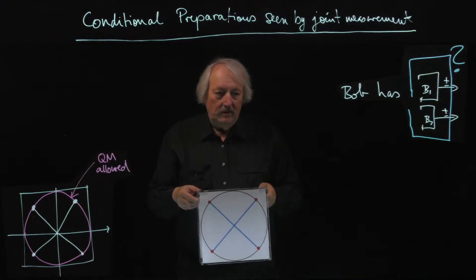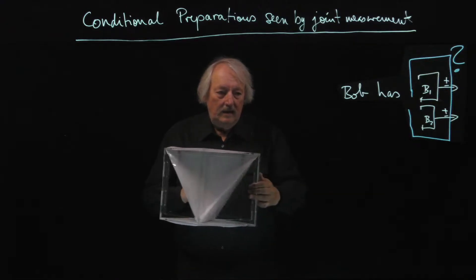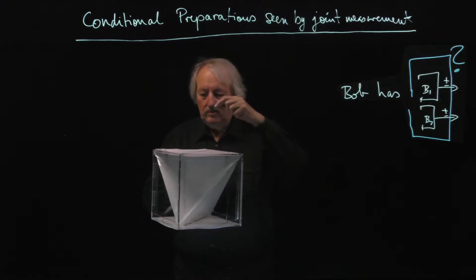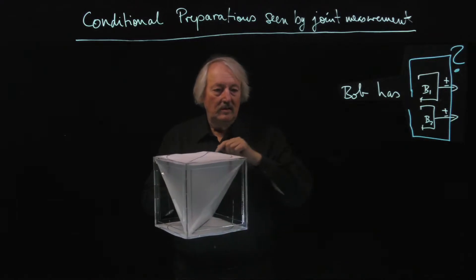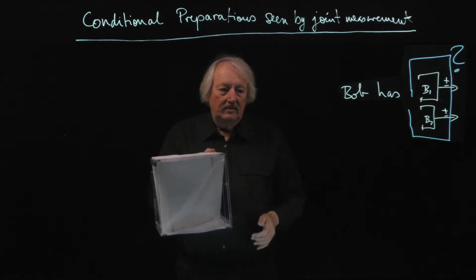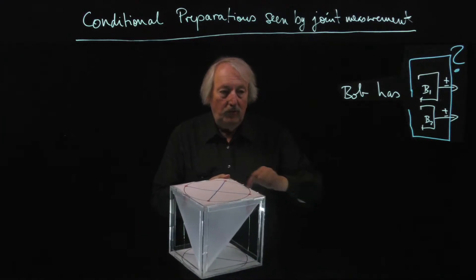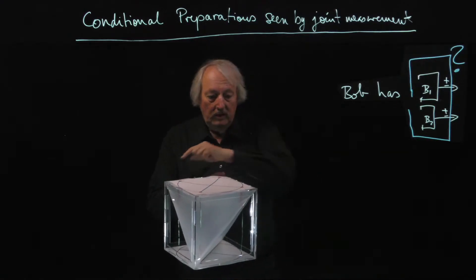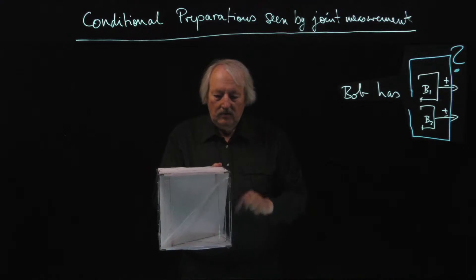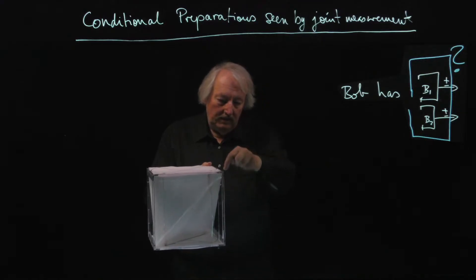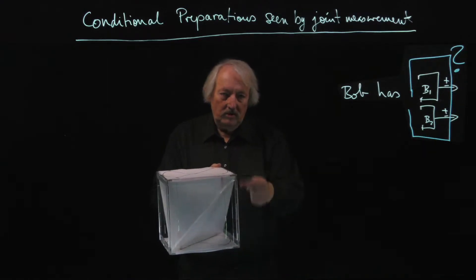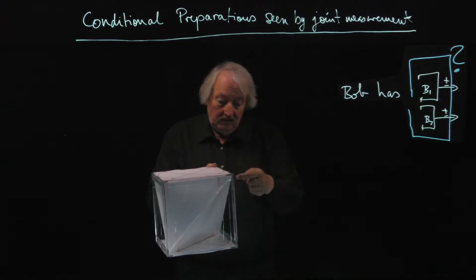I brought this three-dimensional object here — it's a tetrahedron. The four corners correspond to the four outcomes: plus-plus, minus-minus, plus-minus, and so on. The way to understand this three-dimensional figure is that we have the same axes as before — Bob b1 and b2 — and in the vertical direction I've listed b1 times b2. In each vertical slice only one possibility is allowed because this is the product of the two.